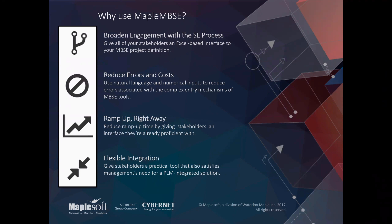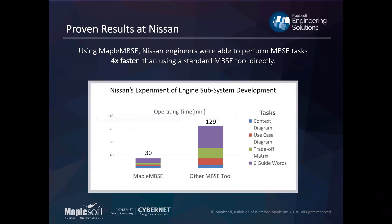As an example of reducing errors, there was a case study done at Nissan. By using Maple MBSE across a variety of different MBSE tasks in developing a certain engine subsystem, the speed of the whole process was really able to pick up. This was because it was easy to understand for the engineers using it, input errors were far less likely, and altogether it was about four times faster for them to use Maple MBSE than the other tool they were using. If you give an engineer something they already know, you stand a much higher chance of them adopting it and using it well right away.